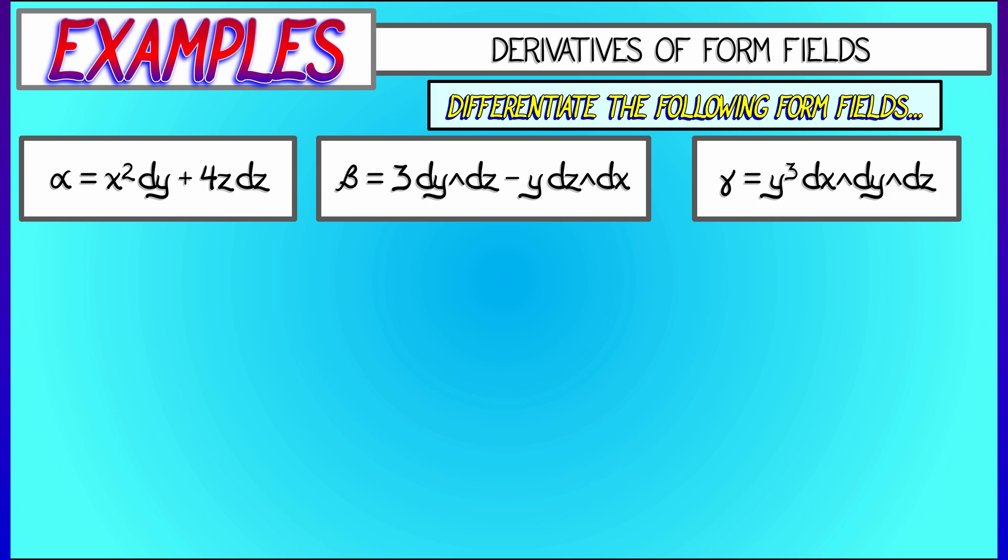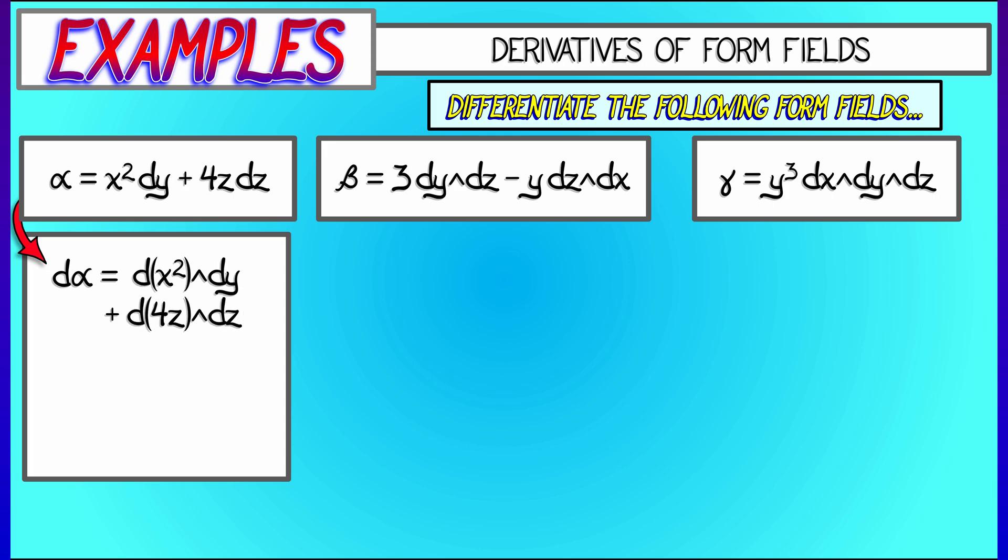Let's differentiate all three of these, starting with alpha. The derivative of alpha is what? According to this inductive rule, I take the derivative of x squared, wedge it with dy, and then add to that the derivative of 4z wedged with dz. Now, you know what the derivative of x squared is. It's 2x dx, and you know that the derivative of 4z is 4 dz. But now I need to wedge these together appropriately. I notice that dz wedge dz vanishes, and I'm left with 2x dx wedge dy as my derivative. The derivative of this one-form is a two-form.